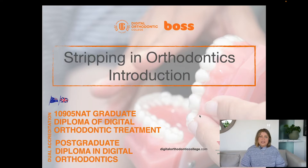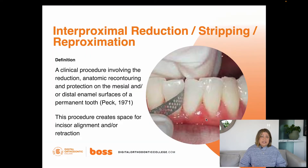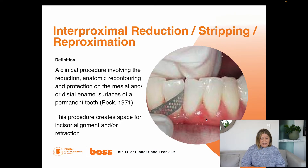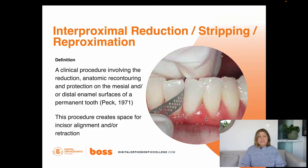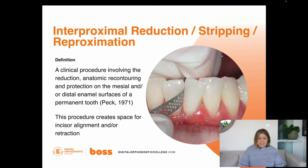Let's introduce what stripping is in orthodontics, starting with some definitions. Stripping is the removal of enamel interproximally. Peck gave an excellent definition in 1971: it's a clinical procedure involving the reduction and anatomic recontouring and protection on the mesial or distal surfaces of enamel of a permanent tooth — not done in deciduous teeth. This procedure is primarily used to create space for crowded dentition, or for retraction of overjets or incisors in protrusive cases.